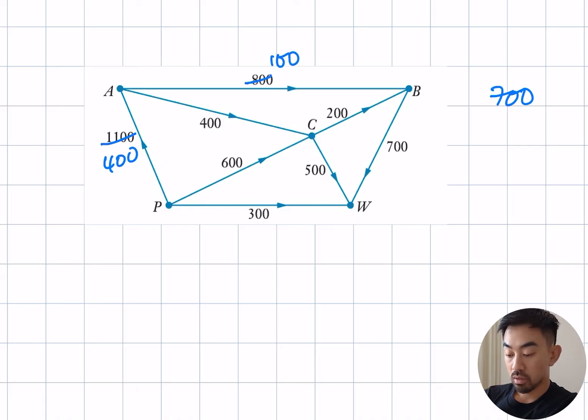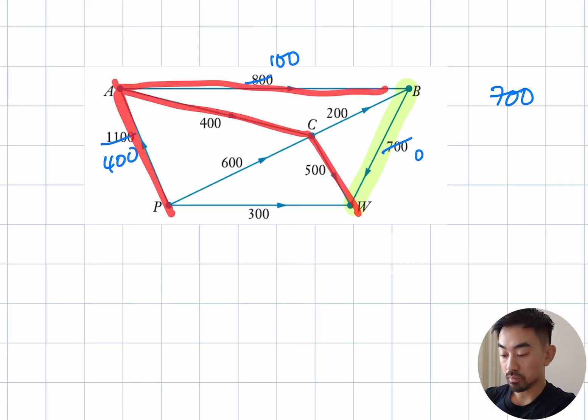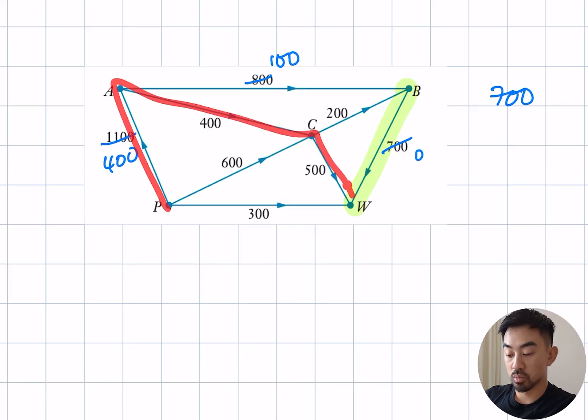So 400, 100, and 0. Highlight that one with 0. So I can't use that again. Let's go P, A, C, W. What's the smallest one on that path? Now because I've updated P to A to 400, that becomes my new smallest one. So subtract away 400 from them. It turns to 0, 0 and 100. Let me highlight the 0s. Can't use them anymore.